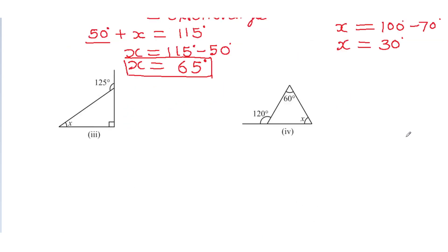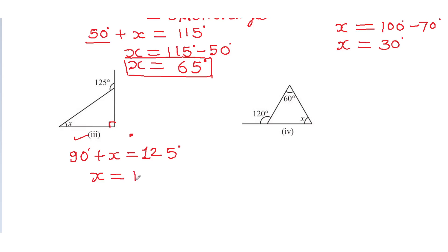Now figure number 3. Observe the figure — you need to find x. The angle marked with a square denotes a right angle, it is 90 degrees, so this is a right angle triangle. So 90 degrees plus x is equal to 125, which is the exterior angle. To find x, subtract 90 from the right-hand side: 125 degrees minus 90 degrees. The answer is 35 degrees. So x is 35 degrees.